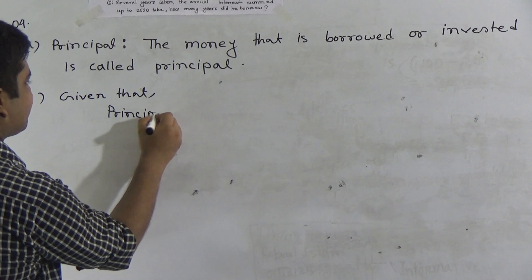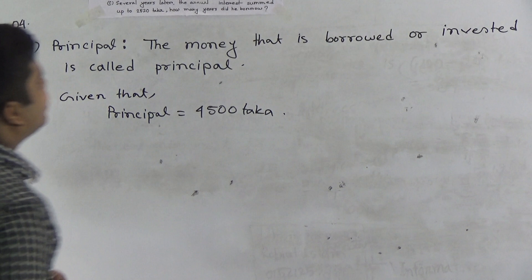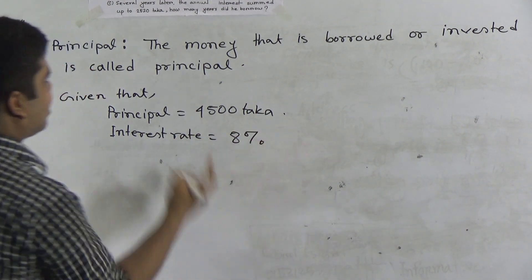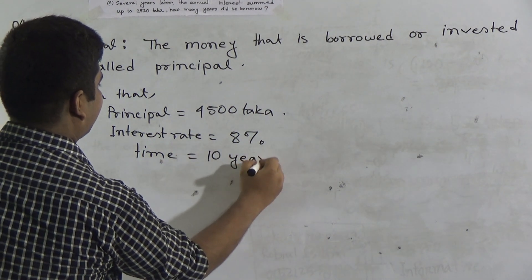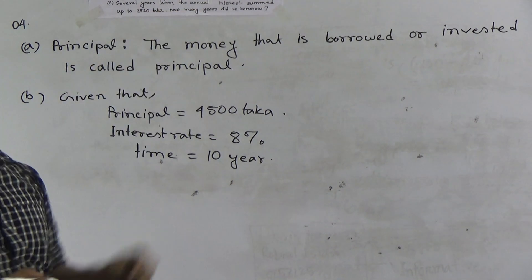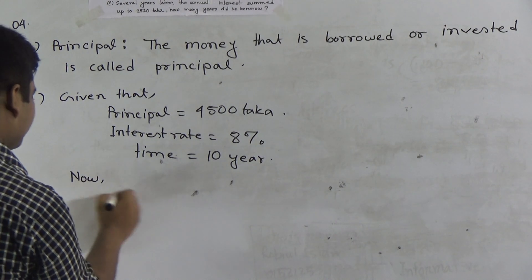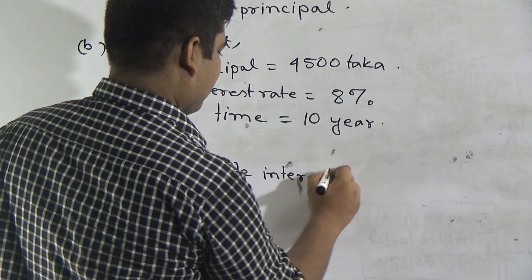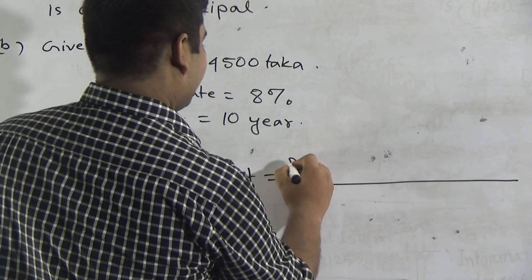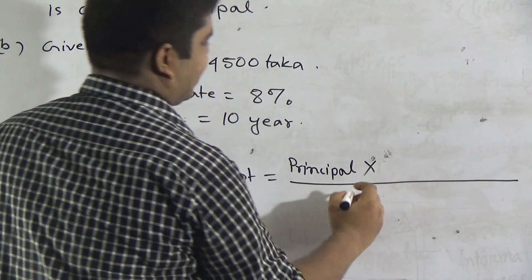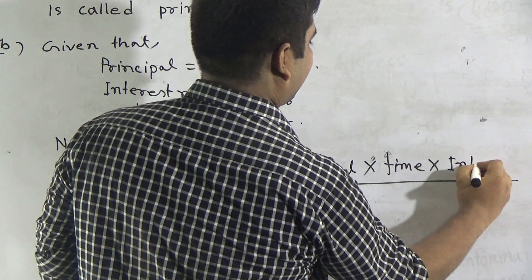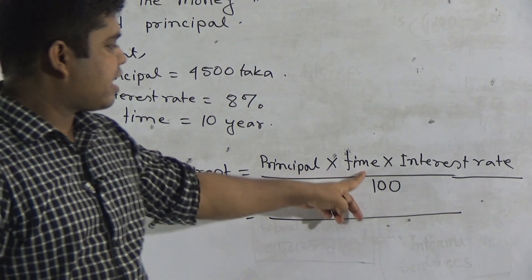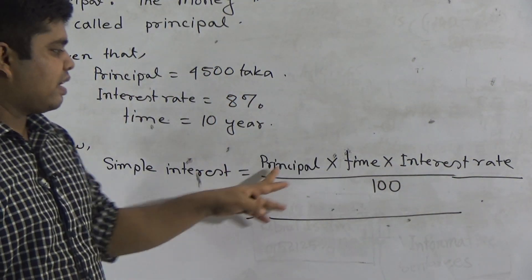Principal is 4500 Dhaka. Interest rate is 8%. Time is equal to 10 years. We need the value of simple interest, and we know the formula of simple interest. Simple interest equals principal multiplied by time multiplied by interest rate, divided by 100. Notice — principal, time, and interest rate are all given. Now we put the values of principal, time, and interest rate.